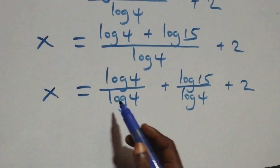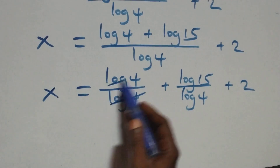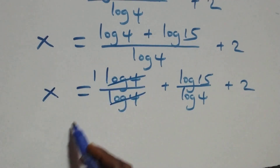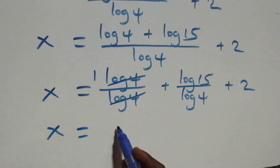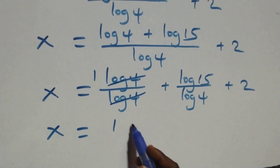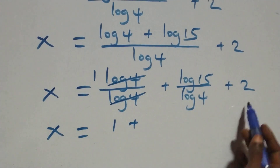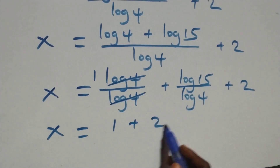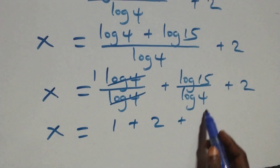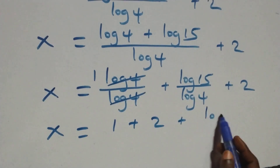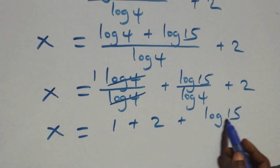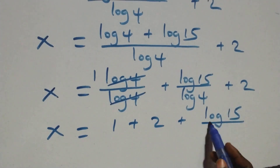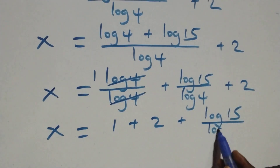Then here, log four over log four cancels to give one, which implies x equals one plus two plus log fifteen over log four. That is x equals three plus log fifteen over log four.